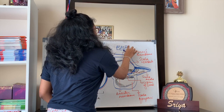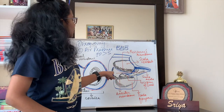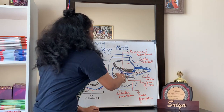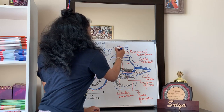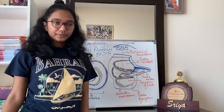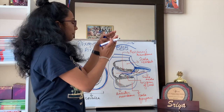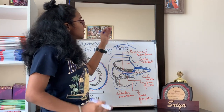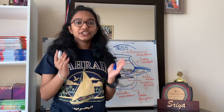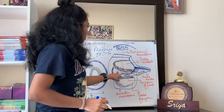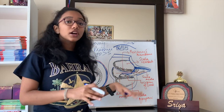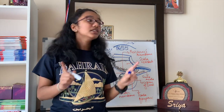The organ of Corti is made up of hair cells which have stereocilia. Stereocilia are non-cellular structures that move. When the endolymph moves, these stereocilia on the hair cells also move. Above the hair cells on the organ of Corti is the tectorial membrane. When the hair cells move, they bend across the tectorial membrane. That bending stimulus causes the hair cells to fire an action potential.